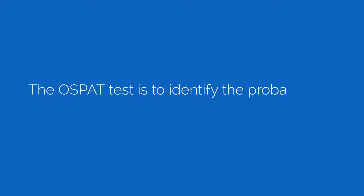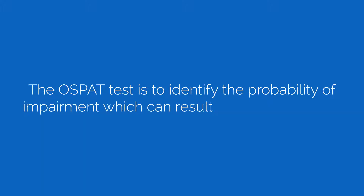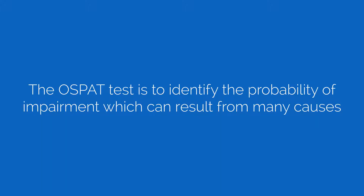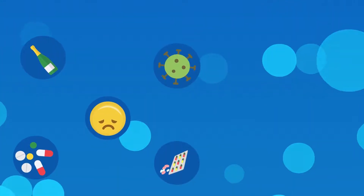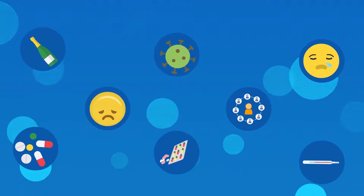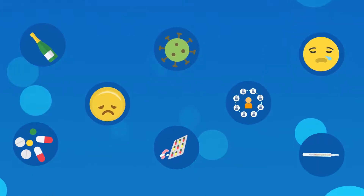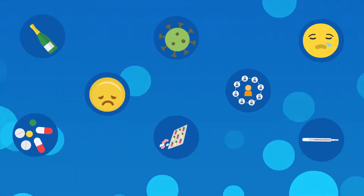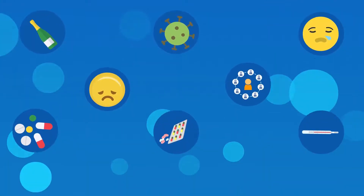The OSPAT test identifies the probability of impairment, which can result from many causes including withdrawal symptoms, alcohol, drugs, fatigue, stress, illness, prescription medication, or any other emotional, social or physiological issues.